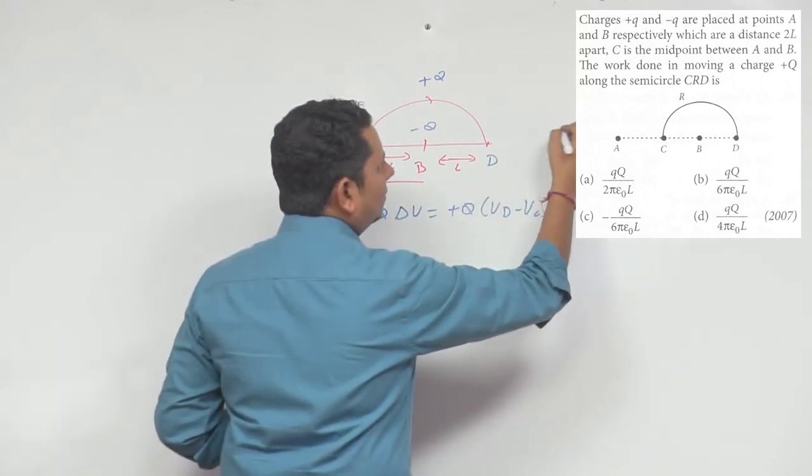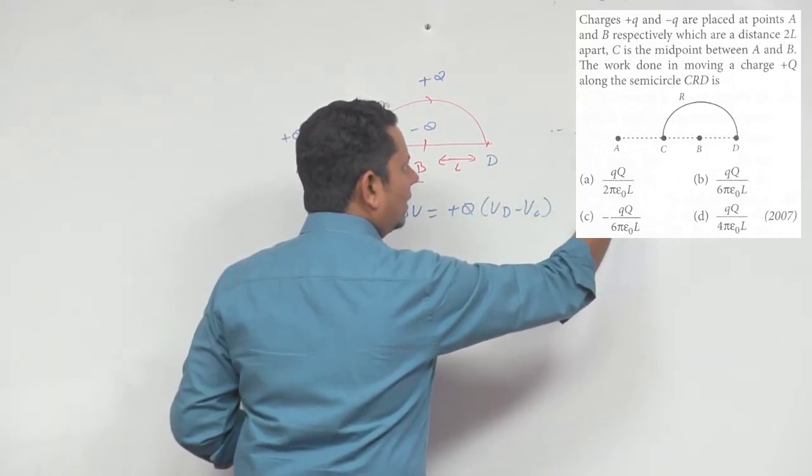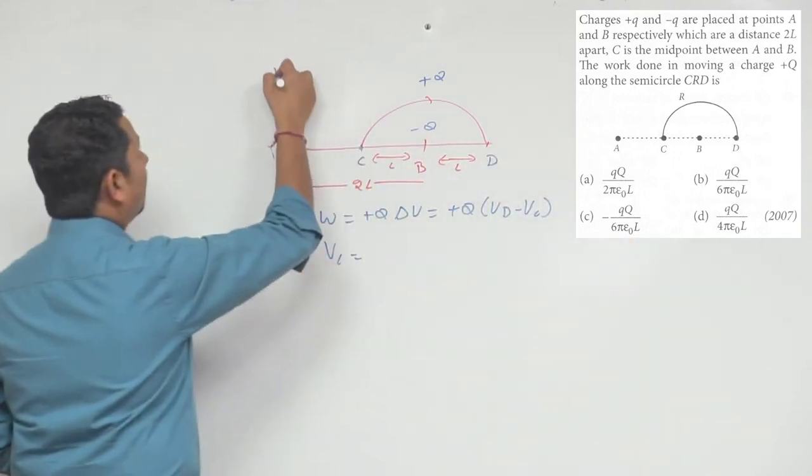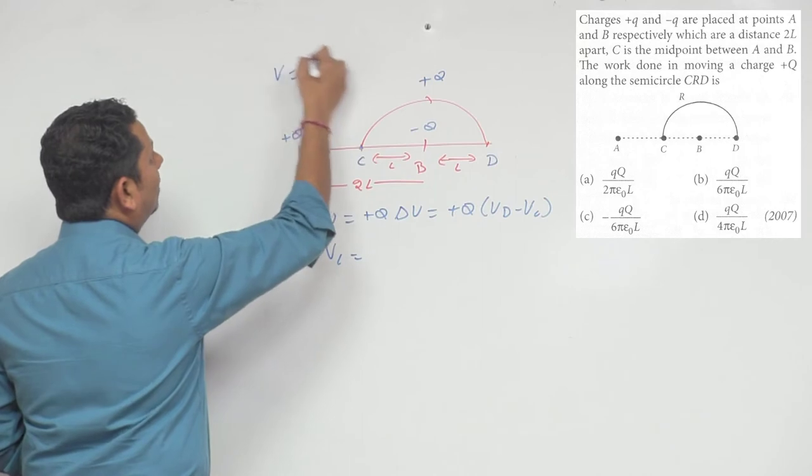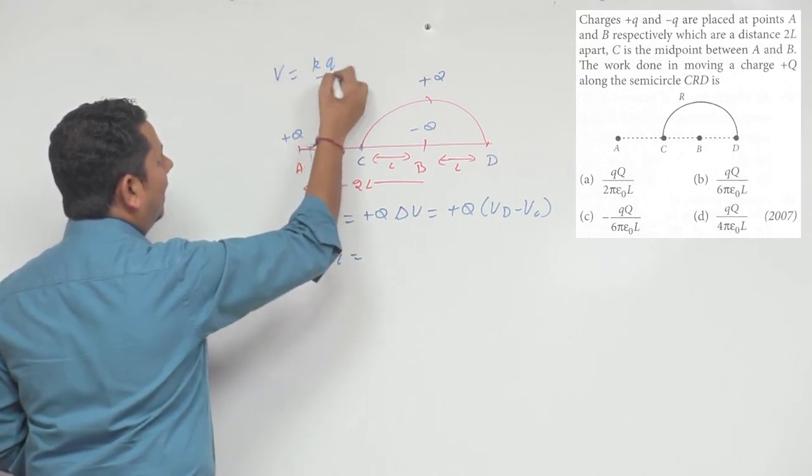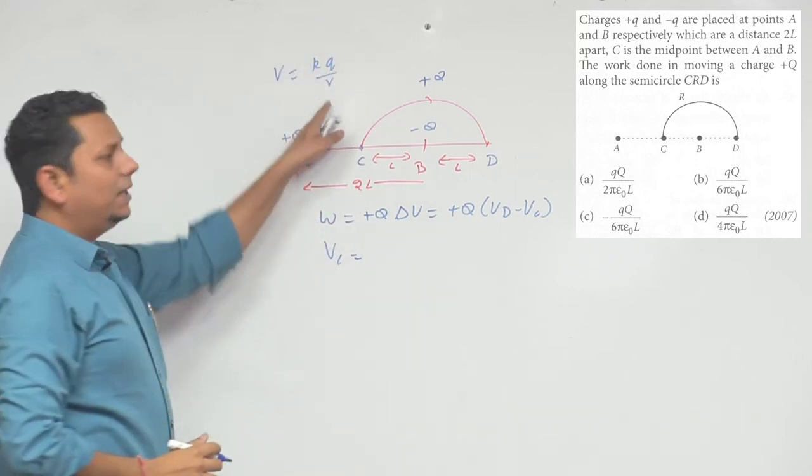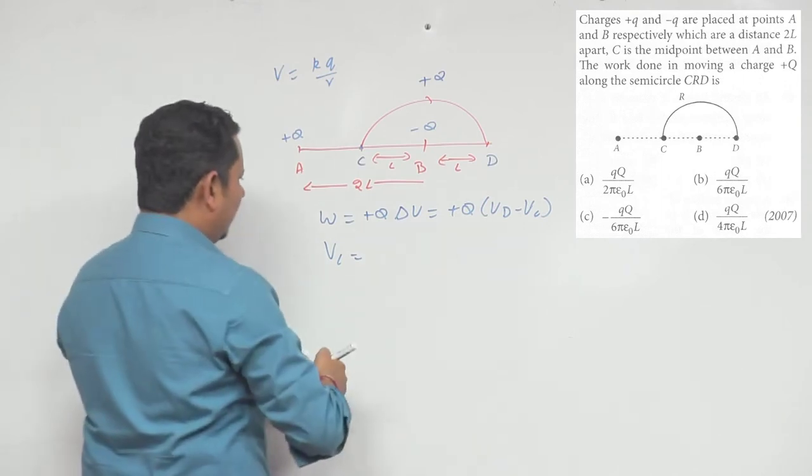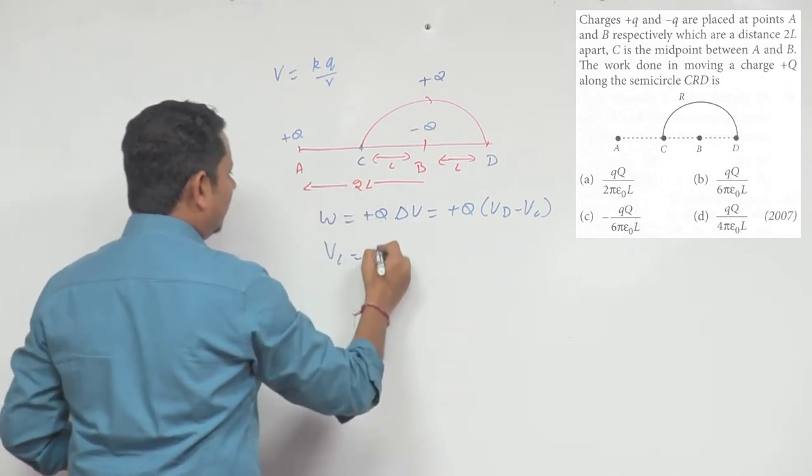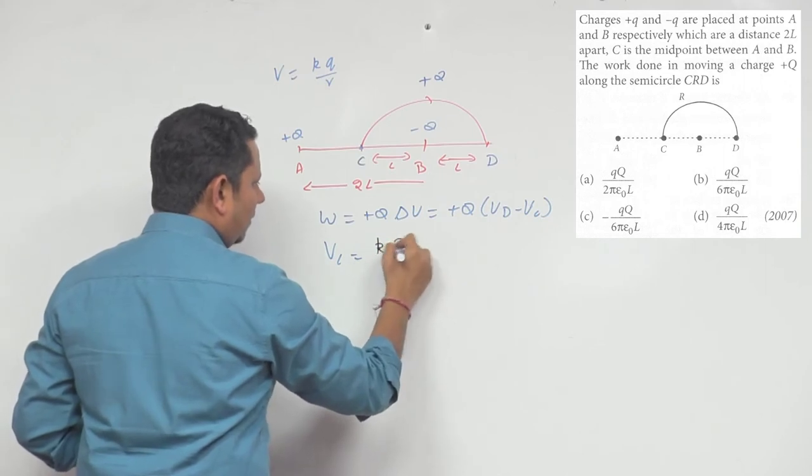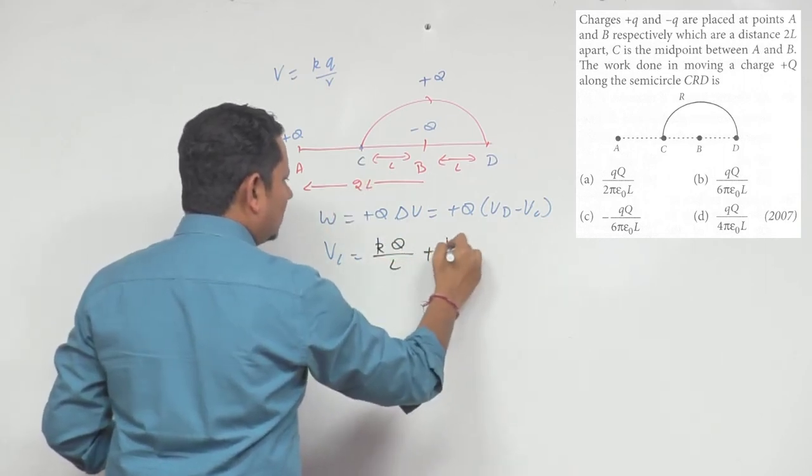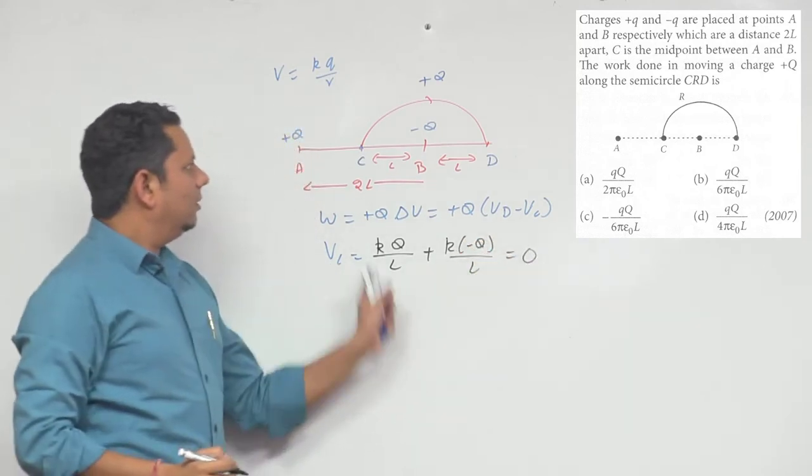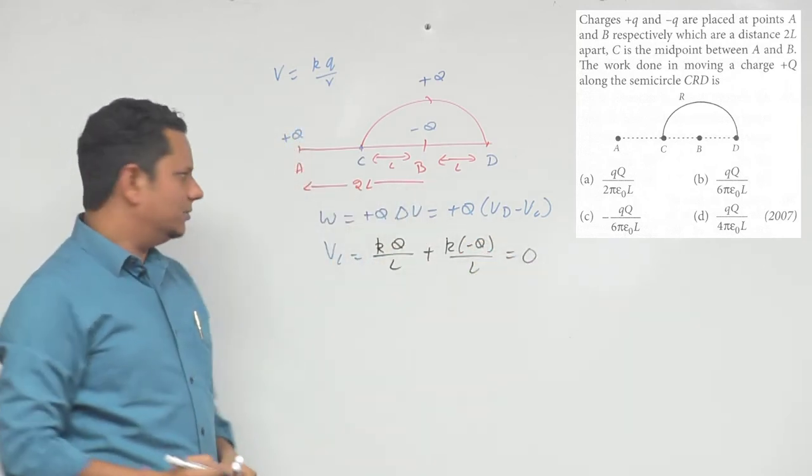Let's calculate and see. We know that due to a point charge, if you write the potential at distance R, it is KQ divided by R. Q is your point charge and R is your distance. Now due to this, we can write VC. VC will be equal to, due to A, K(+Q) divided by L plus K(-Q) divided by L, so its value is zero because it is equidistant from +Q and -Q.